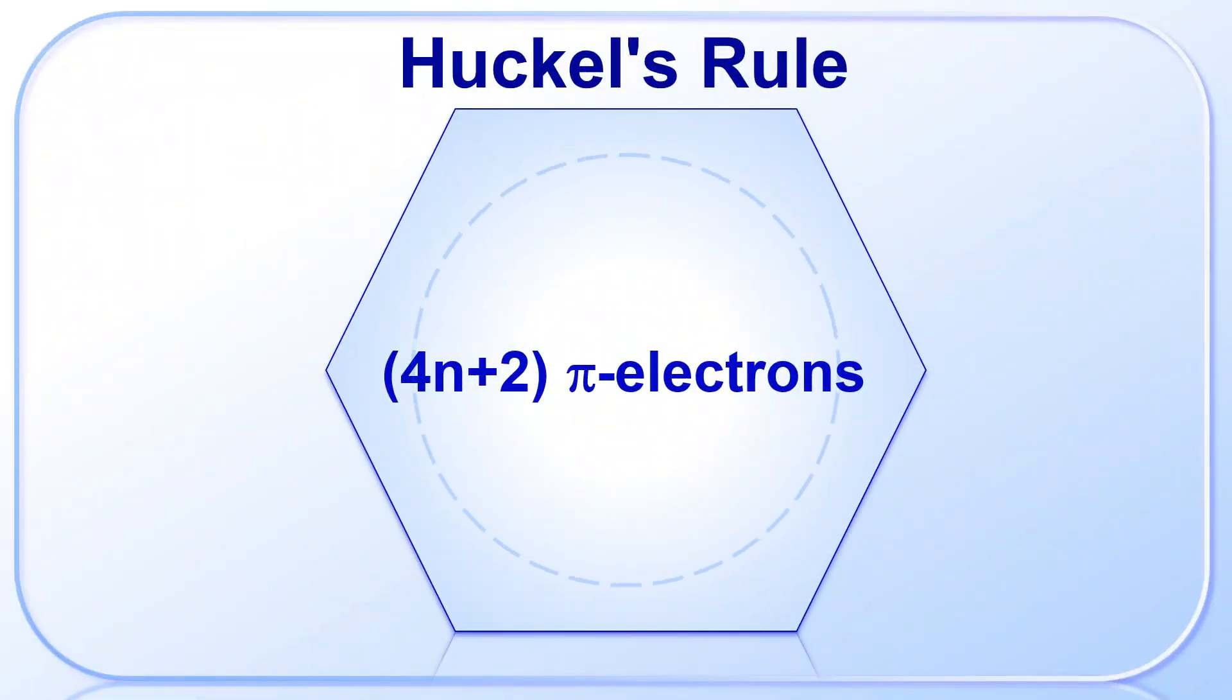Our task now is to identify aromatic compounds using Hückel's rule. According to this rule, any cyclic, planar, unsaturated compound with 4n+2 number of pi electrons that are delocalized along the periphery of the ring in a cyclic loop is aromatic. Let us understand this rule step by step with examples so you can recognize aromatic compounds easily.